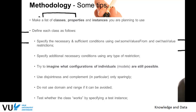Make a list of classes, properties, and instances you plan to use. Then define each class by specifying the necessary and sufficient conditions using OWL 'has value' restrictions. After that, specify additional necessary conditions using any type of restriction. Then think about the different ways individuals could still be instantiated in a valid way — which models would you still consider valid according to your specification. Use disjointness and complement, particularly complement, only very sparingly, as they are a real source of mistakes.